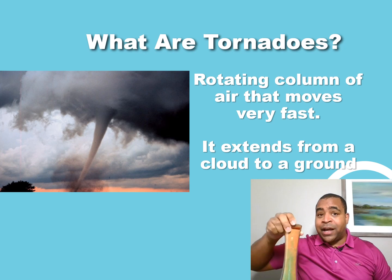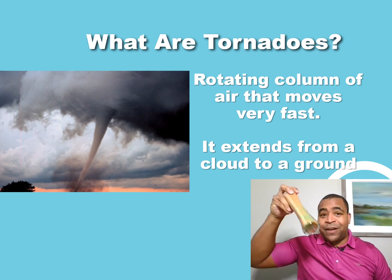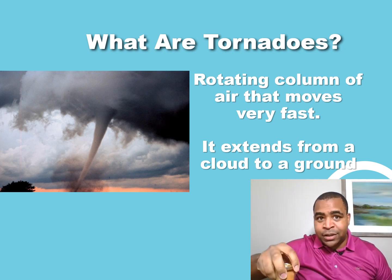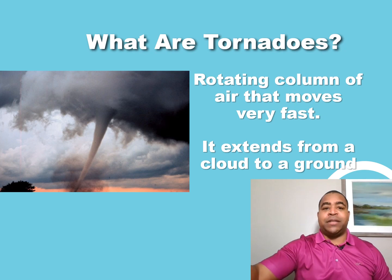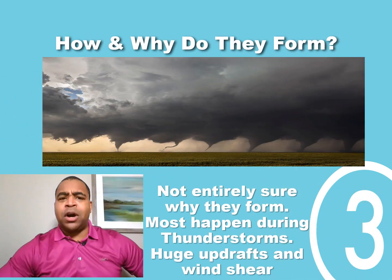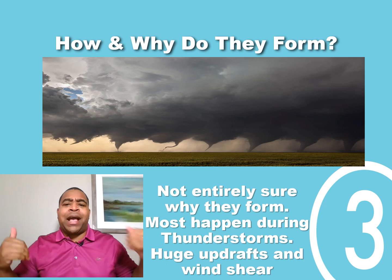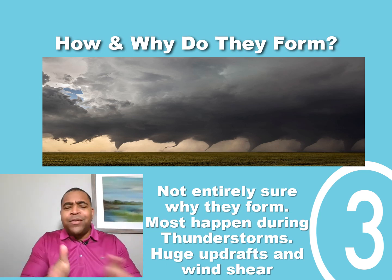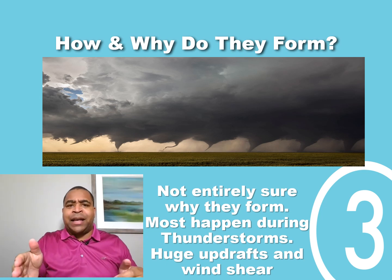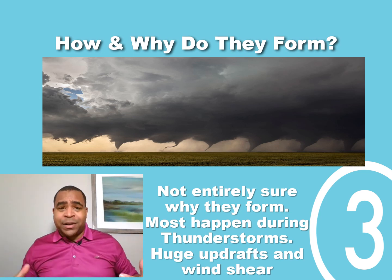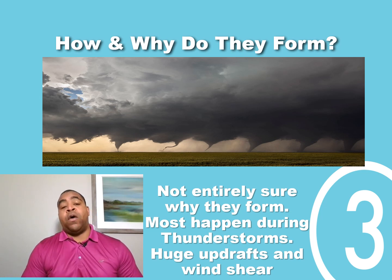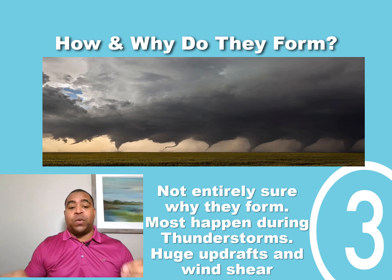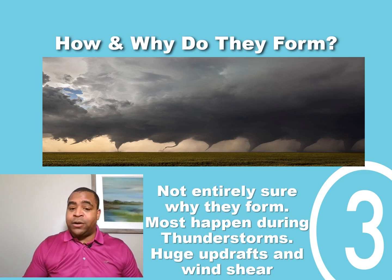Now here's something I do want to point out: until that funnel cloud actually touches the ground, it is not considered a tornado. It is only considered a tornado once that funnel cloud touches the ground. So that brings up another question — how and why do they form, and how exactly does a tornado decide where it's going to hit? Well, the short answer is we really don't know. There's a lot of research going on right now trying to figure out the science behind tornadoes, and we do know that the majority of tornadoes happen in thunderstorms.